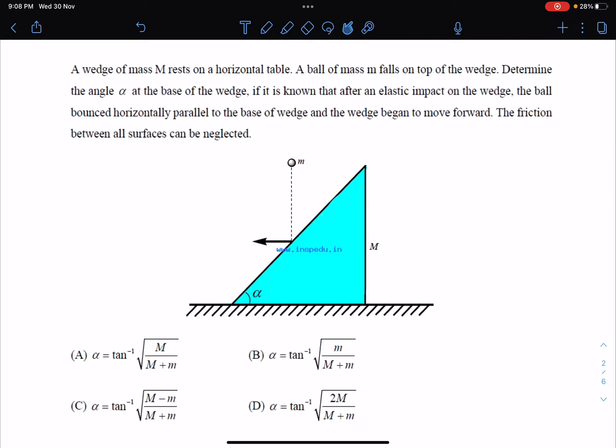Just pay attention to this. Here is the problem from the INSP portal. A wedge of mass M rests on a horizontal table. A ball of mass m falls on top of the wedge. Determine the angle alpha at the base of the wedge.